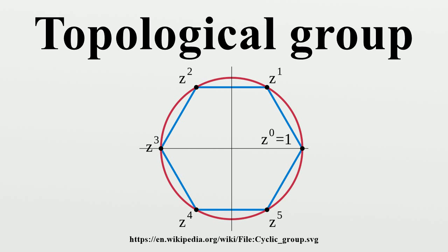but as topological groups there is not an isomorphism. Topological groups, together with their homomorphisms, form a category.